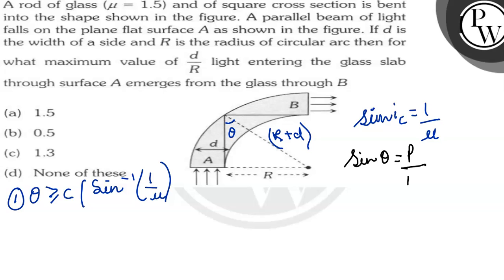And here perpendicular upon hypotenuse it will be R plus D, sorry it will be the perpendicular here is R upon hypotenuse here is R plus D.